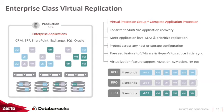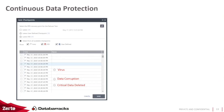You can leverage the VPG entity for protection and define boot order between VMs — for example, starting the database server first, then the application server, then the web server. Zerto performs continuous data protection, protecting your data for every block written, sent asynchronously to the recovery site. This allows you to literally rewind your application to a previous point in time. For example, if at 3:49 PM you had a virus, you can select a checkpoint before that and recover before the virus infected your environment.